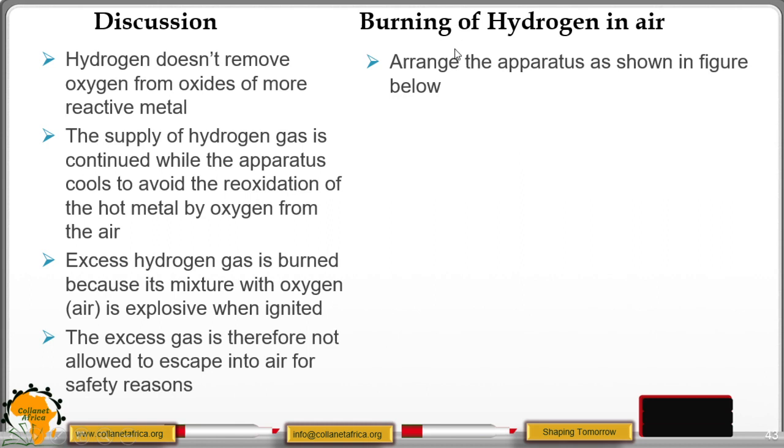When you look at the burning of hydrogen in air, you normally set up the apparatus as shown in the figure. Pass a stream of hydrogen gas through anhydrous calcium chloride.